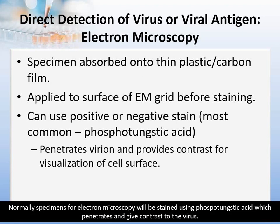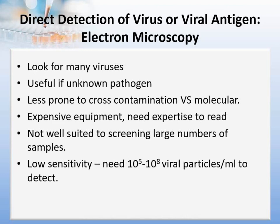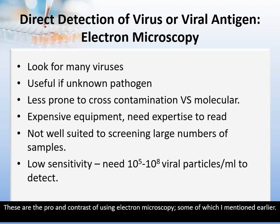Normally, specimens for electron microscopy will be stained using phosphotungstic acid, which penetrates and gives contrast to the virus. These are the pros and cons of using electron microscopy, some of which were mentioned earlier.